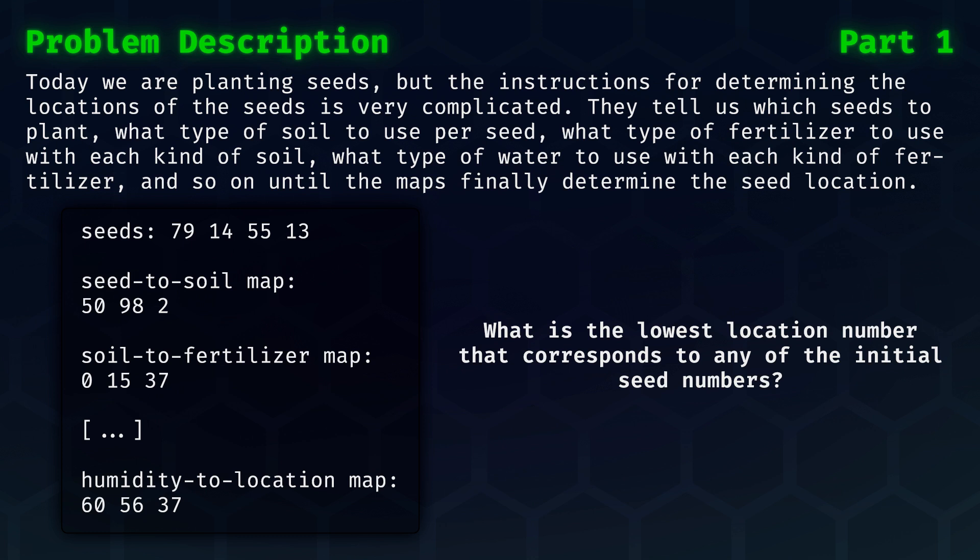To plant the seeds today, we got instructions. But the instructions determining the locations of the seeds is very complicated. They tell us which seeds to plant, what type of soil to use per seed, what type of fertilizer to use with each kind of soil, what type of water to use with each kind of fertilizer, and so on. These properties map from one type to another until we have a full map from seeds to seed locations.